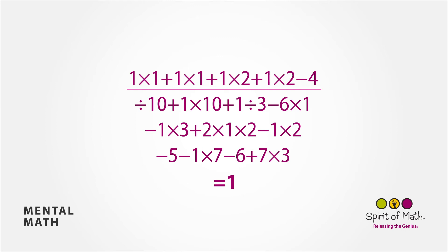14 minus 4 is 10, divided by 10 is 1. 1 plus 1 is 2, times 10 is 20, plus 1 is 21. 21 divided by 3 is 7, subtract 6 is 1, times 1 is 1, subtract 1 is 0.